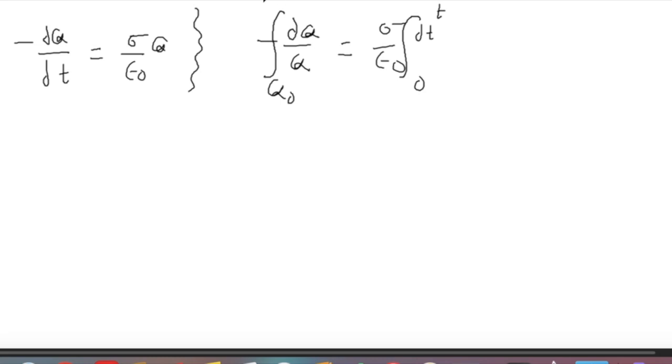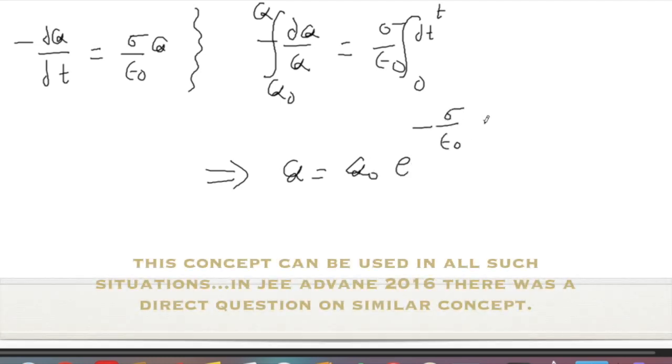The initial charge is Q0 and momentary charge is Q, so I can integrate and get the answer: Q is equal to Q0 e to the power minus sigma over epsilon zero into t. This was the challenging problem number 12. The problem was easy if you know the trick involved, but it can be difficult if you are not able to get the trick exactly.